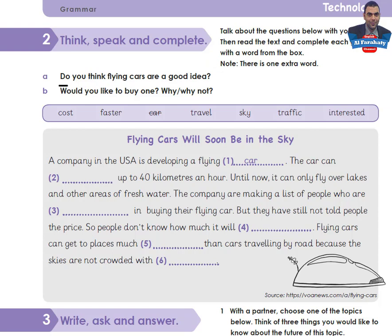Let's try to answer these questions. 'Do you think flying cars are a good idea?' — You can say 'Yes, I think so' or 'No, I don't think so.' 'Would you like to buy one?' — Give a reason. For me: I think flying cars are a good idea. Yes, I would like to buy one because flying cars can get to places much faster.